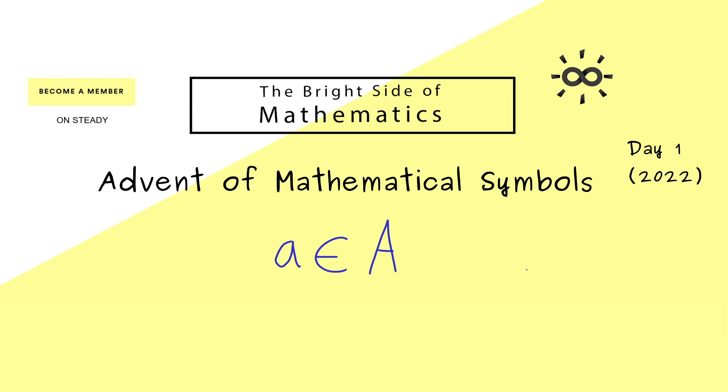The visualization would be that the set capital A is such a collection of elements. This means if 'a in A' is a true statement, we would draw the lowercase a inside the capital A.